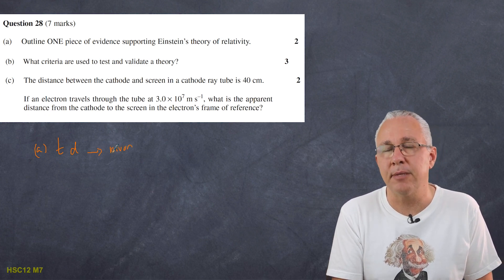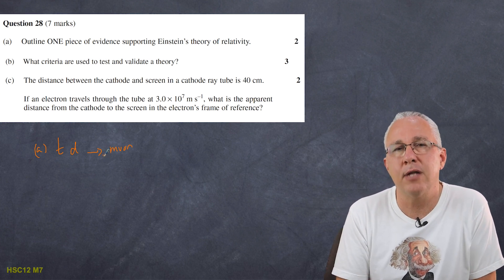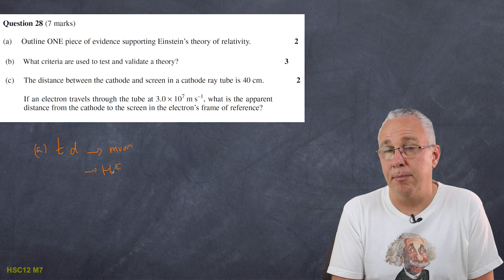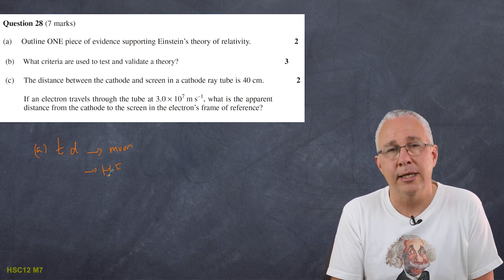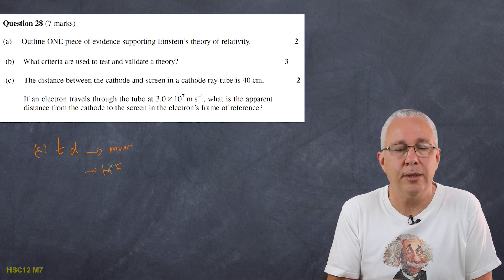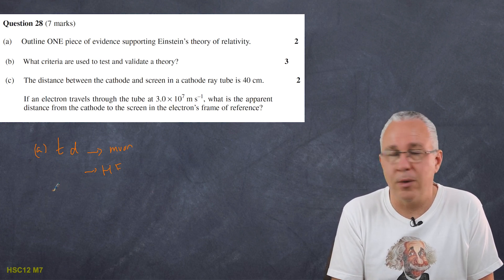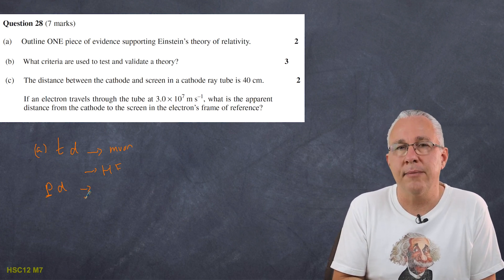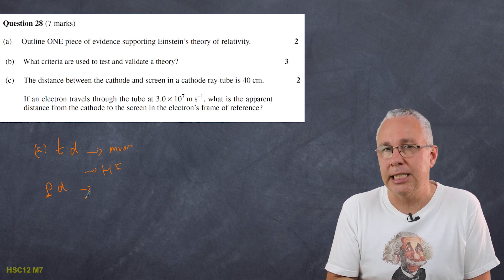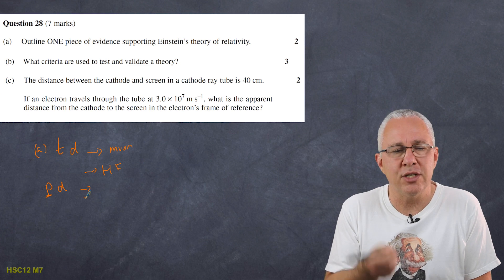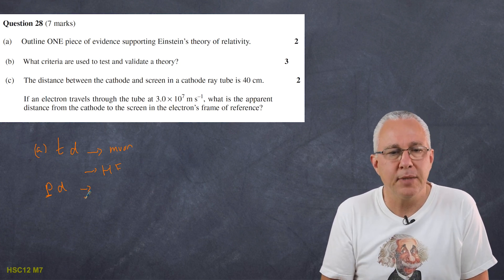For time dilation evidence: first, the muon — subatomic particles created in the upper atmosphere whose half-lives are dilated when measured at ground level. Second, the Hafele–Keating experiment, where atomic clocks on a plane were compared to clocks kept on the ground, showing a time difference (though general relativity also contributes). Third, momentum dilation: particle accelerators such as CERN's Large Hadron Collider show that particles travelling near the speed of light have significantly larger momentum than classical calculations predict.